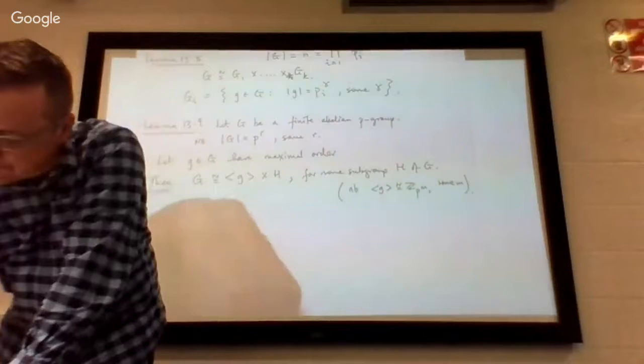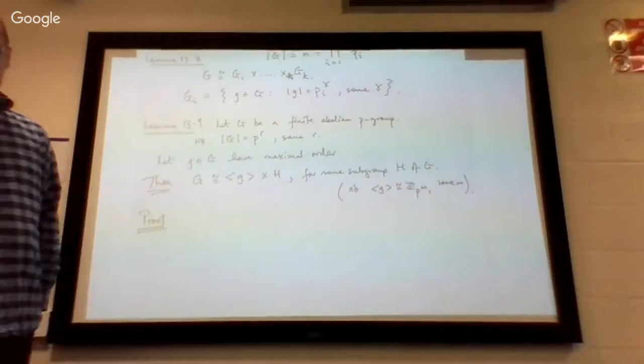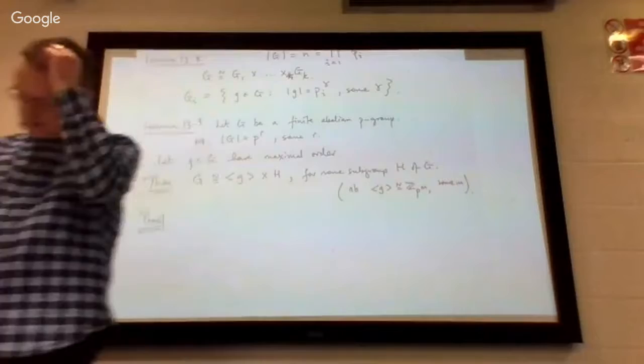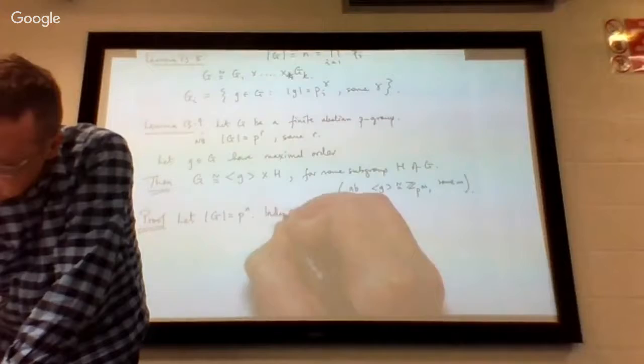So that's what we've got to prove. Now, proof. How are you going to prove this? You've got to approach it in some kind of systematic way. So we're going to be inducting on the order of the group. Let the order of G be P^n. We'll use induction on n.